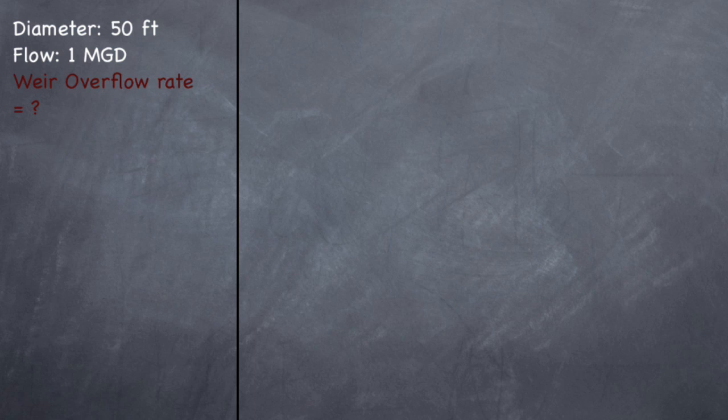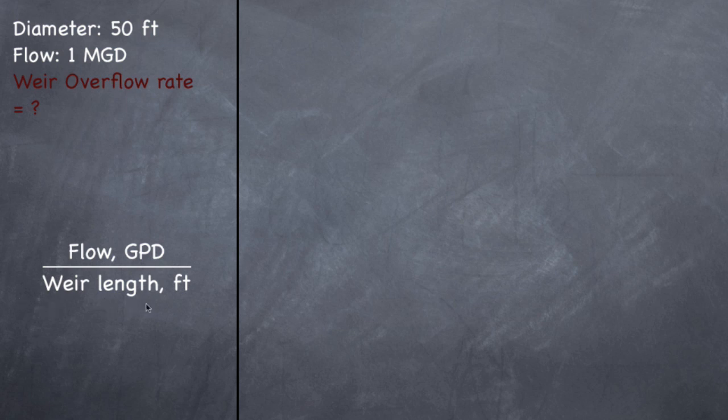Weir overflow rate. This is how much water is going over your weirs of a clarifier per linear foot of weir length. So you need to find out how long your weir is and then divide it into your flow. So the formula for weir overflow rate is flow in gallons per day divided by your weir length in feet. Now, remember what I said earlier? Anytime you see diameter or circumference, that is a circle. And I use circles because they're the most common ones that they use because they're slightly harder than squares.